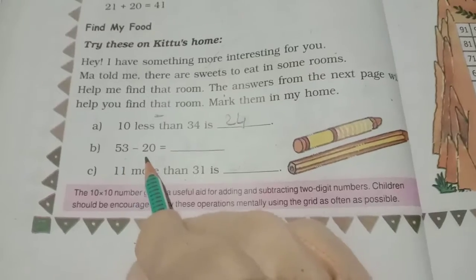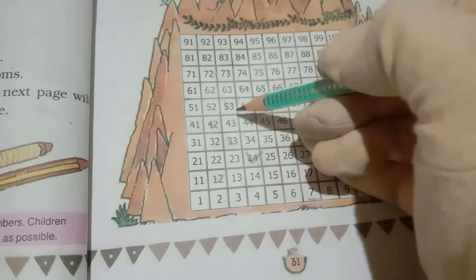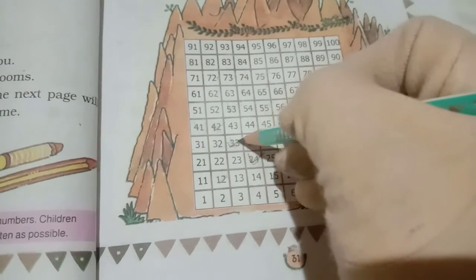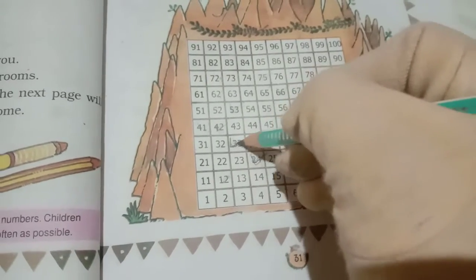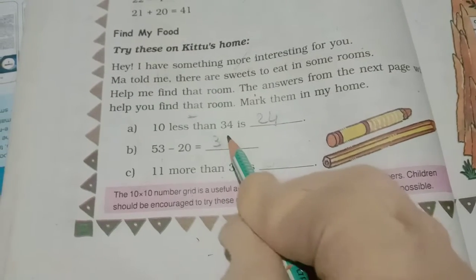Now 53 minus 20. 53 is given in here, we have to go 2 steps down. 1, 2. So answer will get number 33. 1 step means 10, 2nd step means 20. So answer will get 33. So write in here number 33.